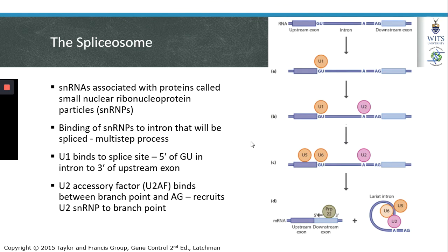Small nuclear RNAs are associated with proteins called small nuclear ribonucleoprotein particles, or SNRPs. Because these snRNAs are rich in uridine, they are referred to by numbers U1, U2, and so on, as are the SNRPs they are associated with.